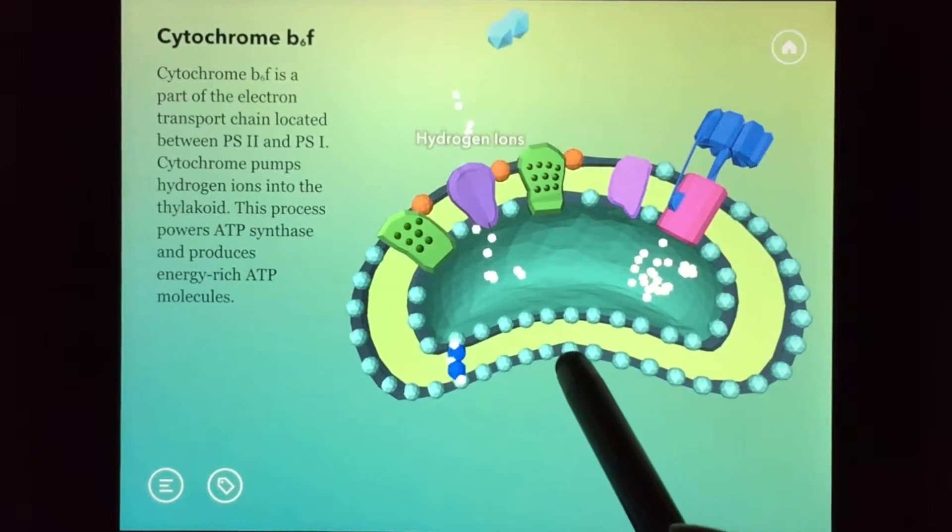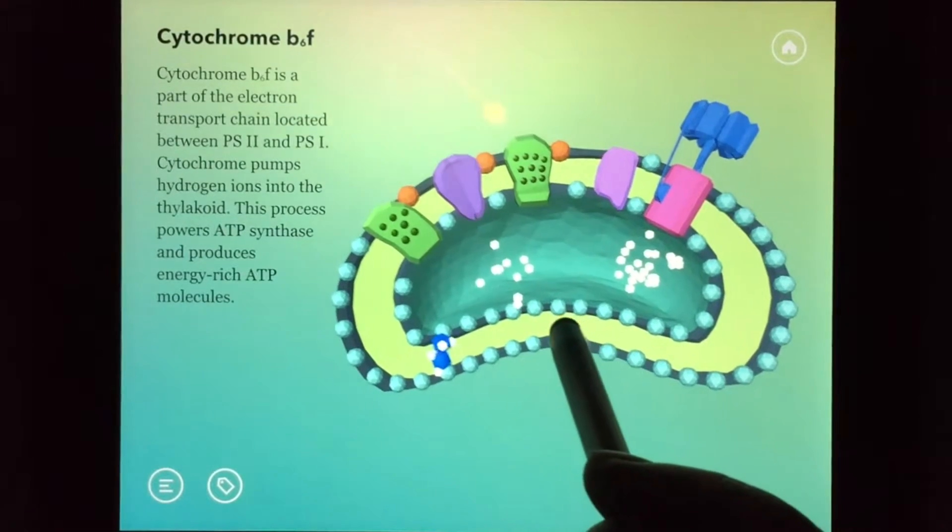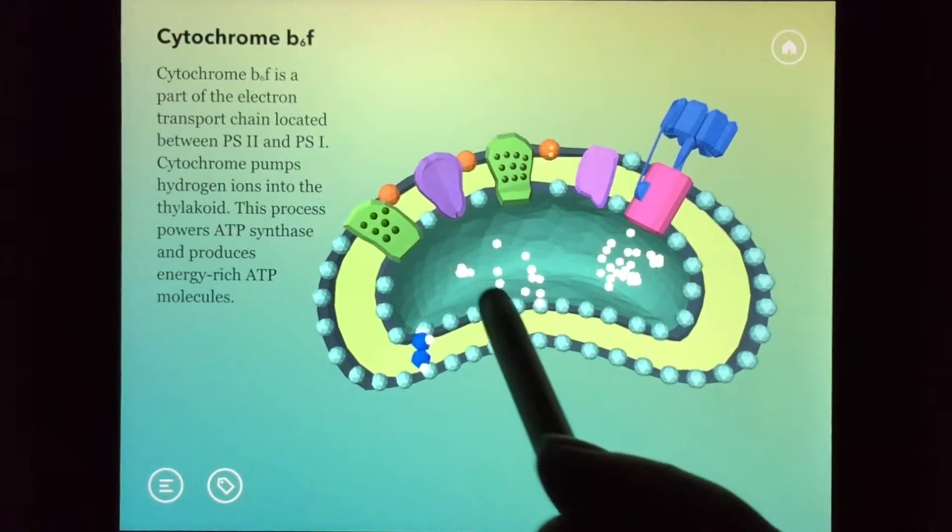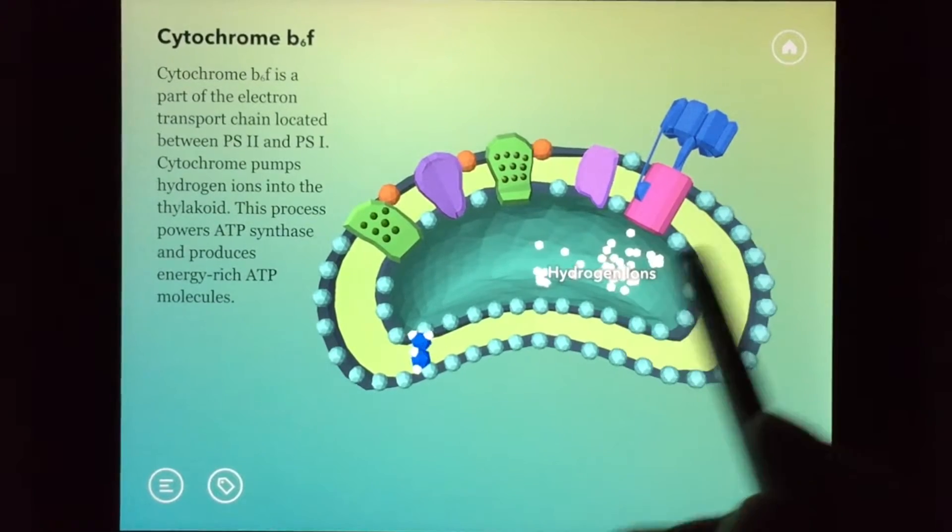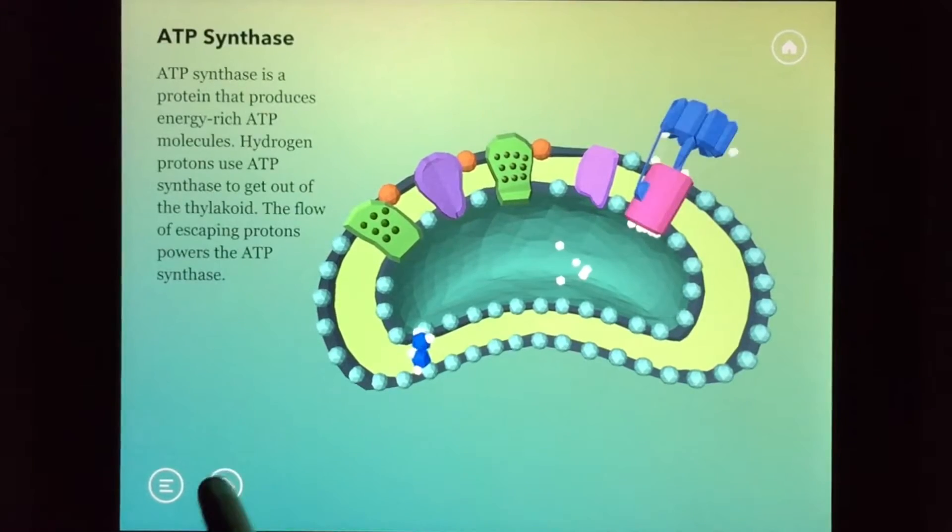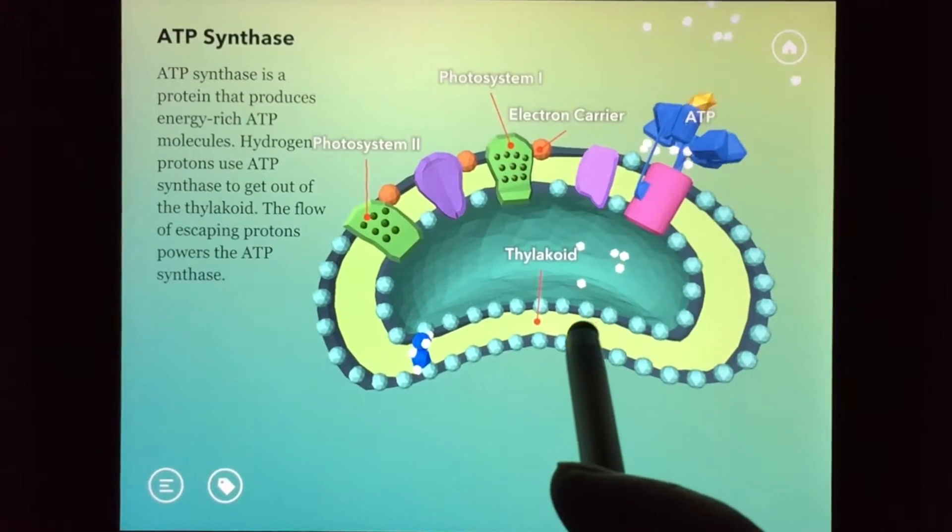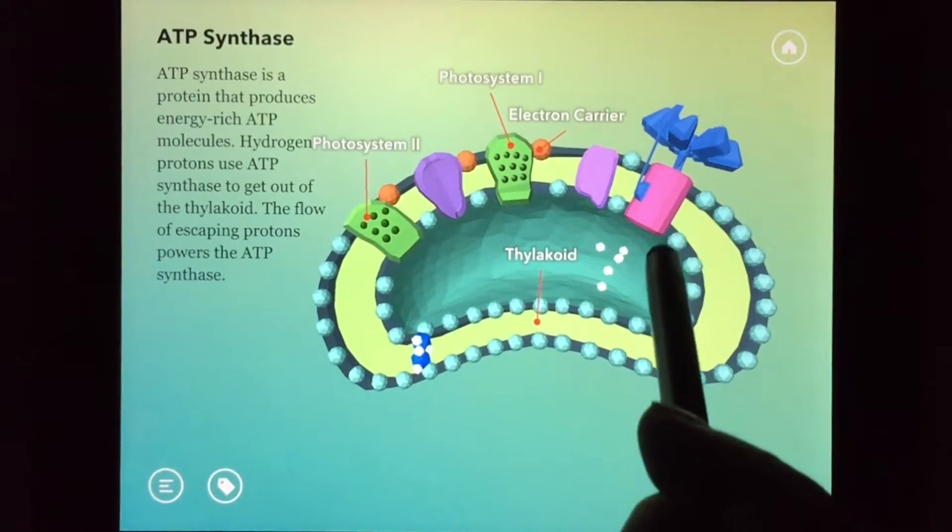Then, what will those hydrogen ions do in the thylakoid? If enough hydrogen ions gather in the thylakoid, this concentration gradient powers a protein called ATP synthase, which produces energy-rich ATP molecules.